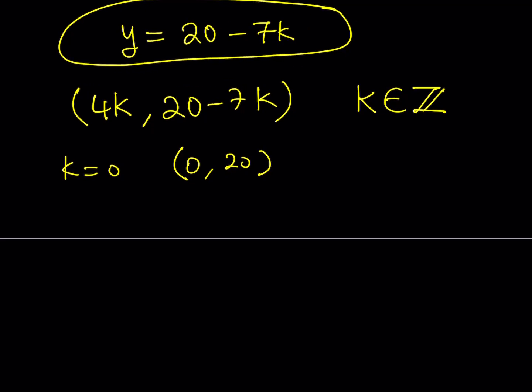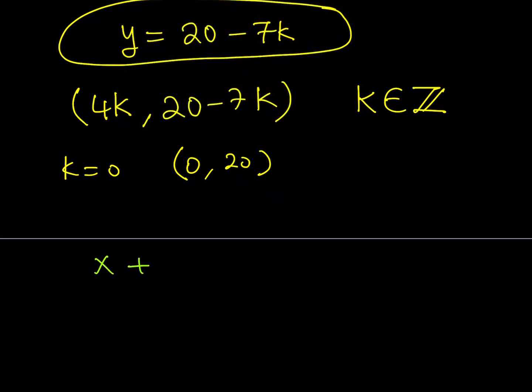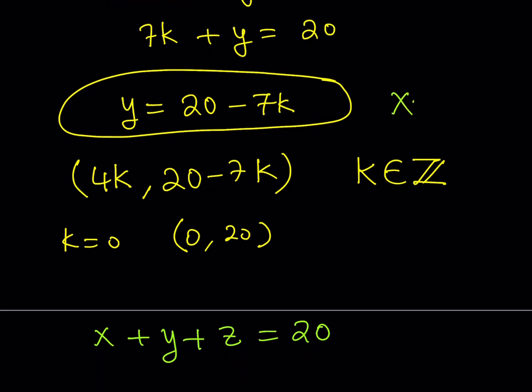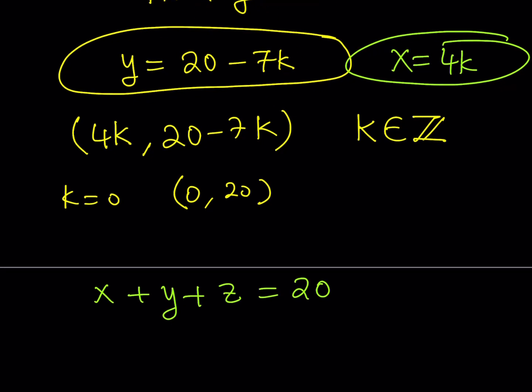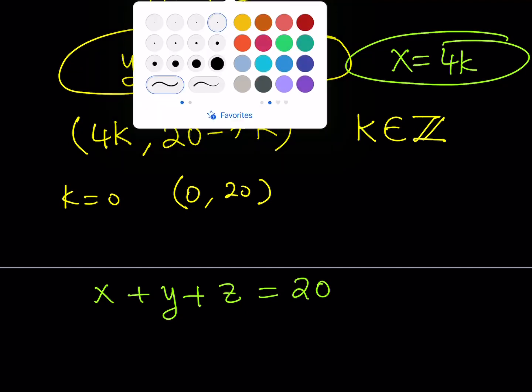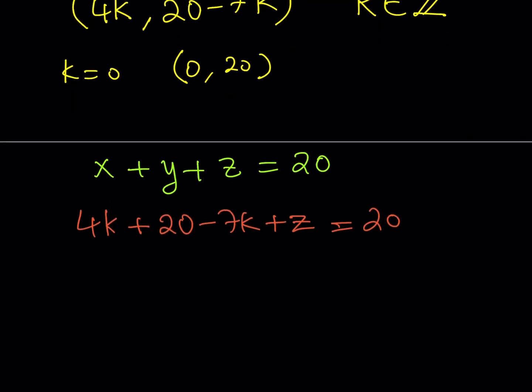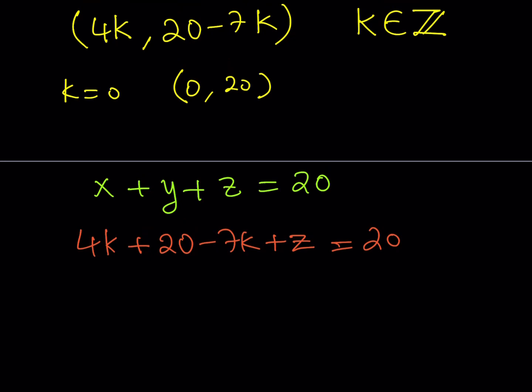Here's what we're going to do. I'm going to use the second equation because it's easier to handle: x plus y plus z equals 20. I know x and y in terms of k. So I'll substitute these values into my equation. Replace x with 4k, y with 20 minus 7k. If you solve for z, these two will cancel out. Notice that x plus y gives you negative 3k plus 20, so from here you should be getting z equals 3k.